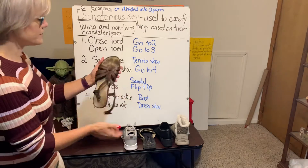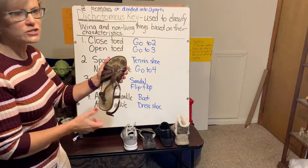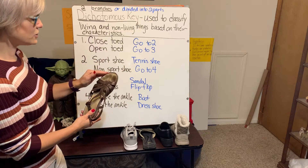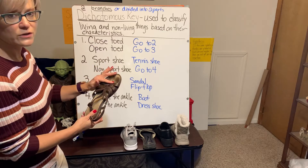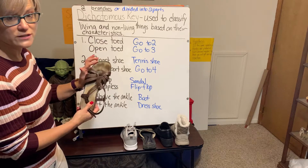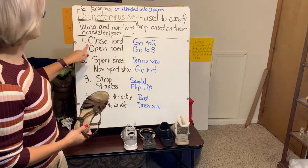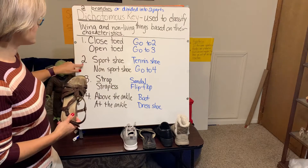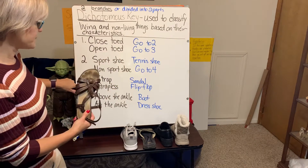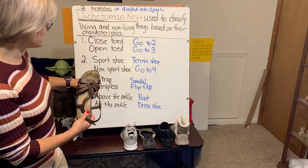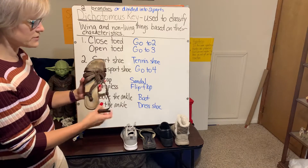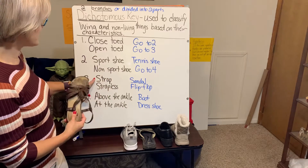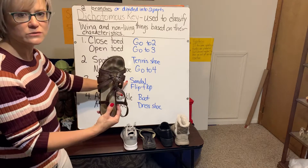Starting with the sandal: is it closed-toed or open-toed? This is open-toed — not something I'd want to wear into the lab. Since it's open-toed, I go to step three, skipping two. Now step three asks: does it have a strap or is it strapless? I notice there's a strap on the back, so it has a strap. That means this is my sandal.